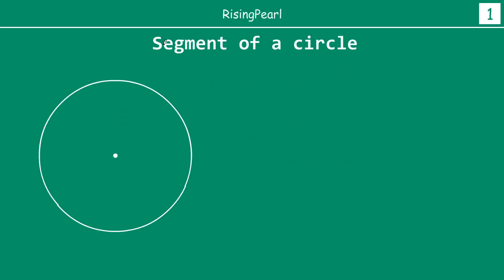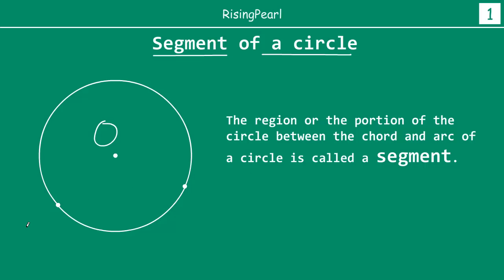Before we talk about the area, let's refresh our memory on what is a segment of a circle. So we have a circle — let's say the center of the circle is O. Now we are going to take any two points on the circle. I have drawn a point A and a point B. We are going to join them with a chord AB — that means joining A and B by a straight line. Now what we notice is that this chord AB has divided the entire circle into two parts.